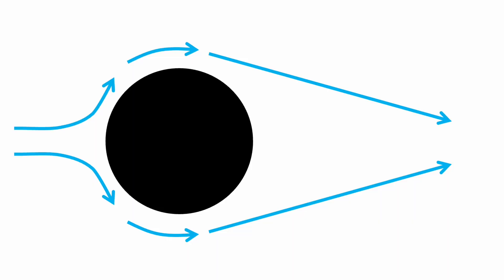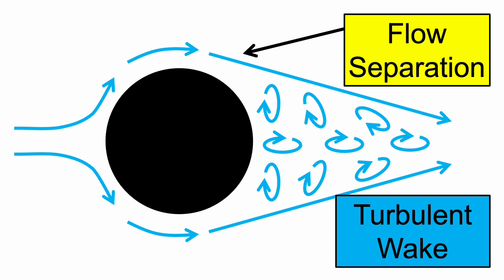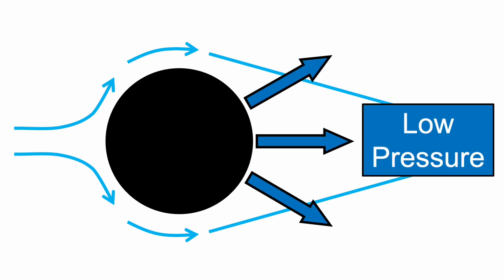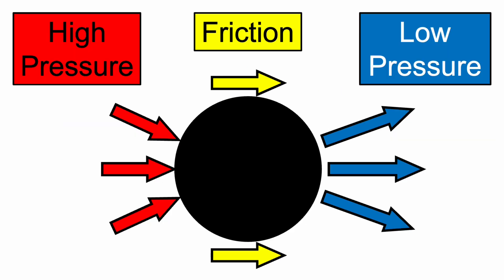Form drag also returns at the back of the object. As the streamlines curve around it they separate from the surface, creating a turbulent wake where the streamlines chaotically mix together. This turbulent wake is characterized by pressure significantly lower than atmospheric pressure. Since the pressure at the back is very low, there is much less force pushing the object forwards, resulting in an even greater net backwards force.